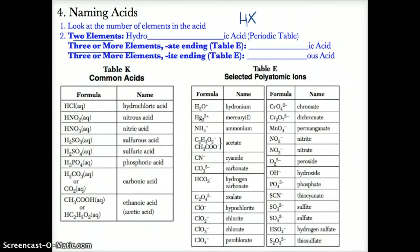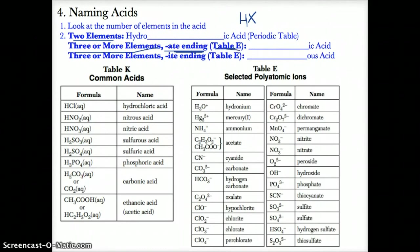If you have three or more elements in the acid and the polyatomic ion has an -ATE ending from table E, name it blank-IC acid. If you have three or more elements and an -ITE ending, name it blank-OUS acid.